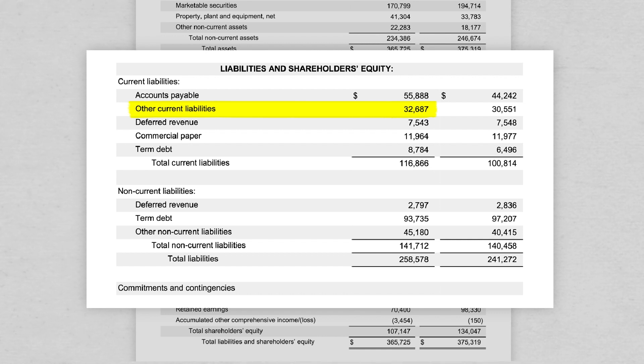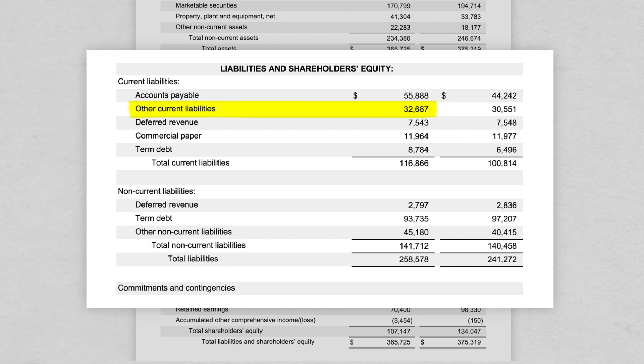This includes all the money that we owe other people that's not included in the unpaid invoices section in the accounts payable line.